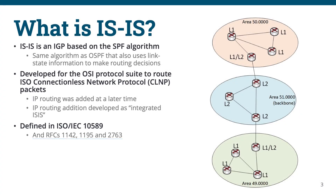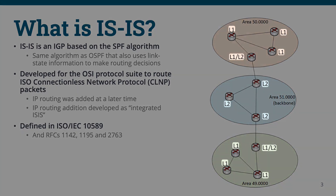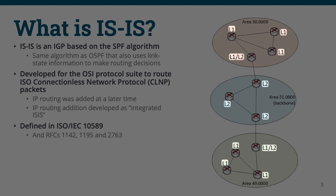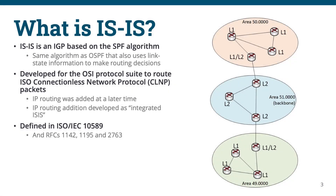Before we move into the next slide, there are a few items I want to draw your attention to in the diagram here. First, note that we still have the same concept of areas in ISIS as we do in OSPF. However, a router is wholly contained within an area, rather than just its interfaces. Also, we have these delineations for routers of L1, L2, and L1/L2, which we'll discuss the importance of in the following slide.